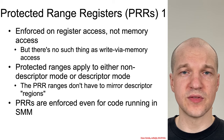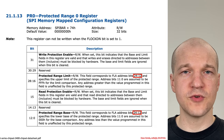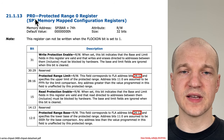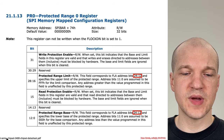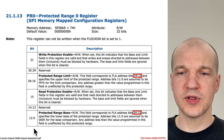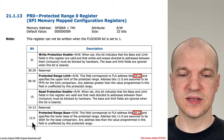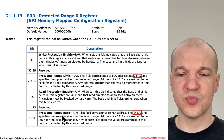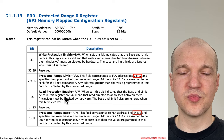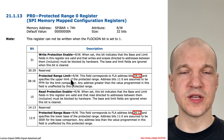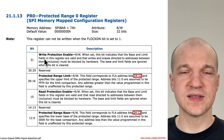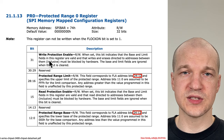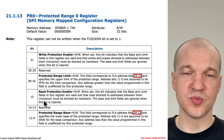If we go look in the datasheets for the protected range registers, we'll find things like PR0. This one is at SPI bar plus 74, and this is the zeroth one — we said there are five total. When we look at it, we see that it has 13 bits (0 through 12): 13 bits for a protected range base, 1 bit for read protection, 13 bits for protected range limit, and 1 bit for write protection. The write and the read are pretty self-explanatory — if the write protect bit is set, the range applies to protection against writes; if the read protect bit is set, it applies to protection against reads.